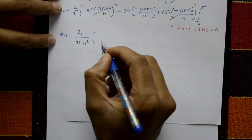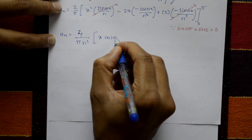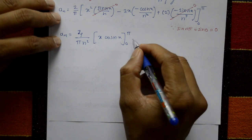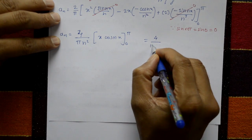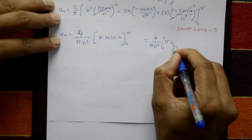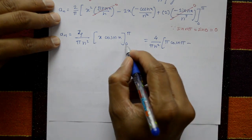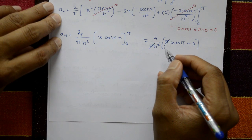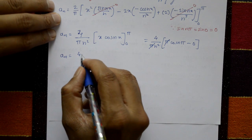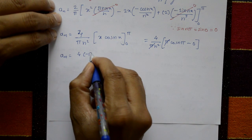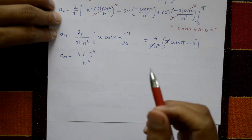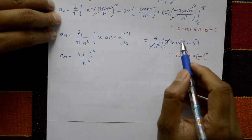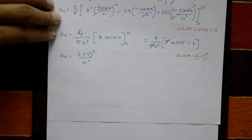Applying the upper limit: (4/πn²) · [π · cos(nπ) − 0 · cos(0)]. The π cancels, leaving 4/n² · cos(nπ). Since cos(nπ) = (−1)ⁿ, we get aₙ = 4·(−1)ⁿ/n².